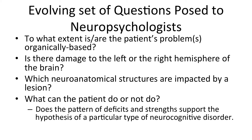The most pertinent current question in neuropsychology is: what can the patient do, what can the patient no longer do, or what can the patient not do now that we hope they'll be able to do in the near future with some help? And does the pattern of deficits and strengths support the hypothesis of a particular type of neurocognitive disorder — be that a stroke, Alzheimer's, or something developmental?